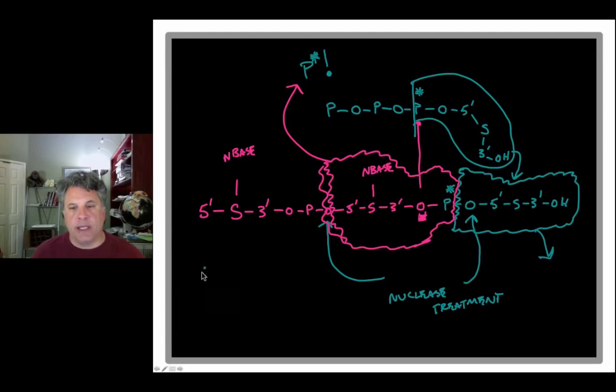So in the next lecture, we'll actually talk about why polymerases may have evolved to only have 5' to 3' polymerase activity and not the reverse.